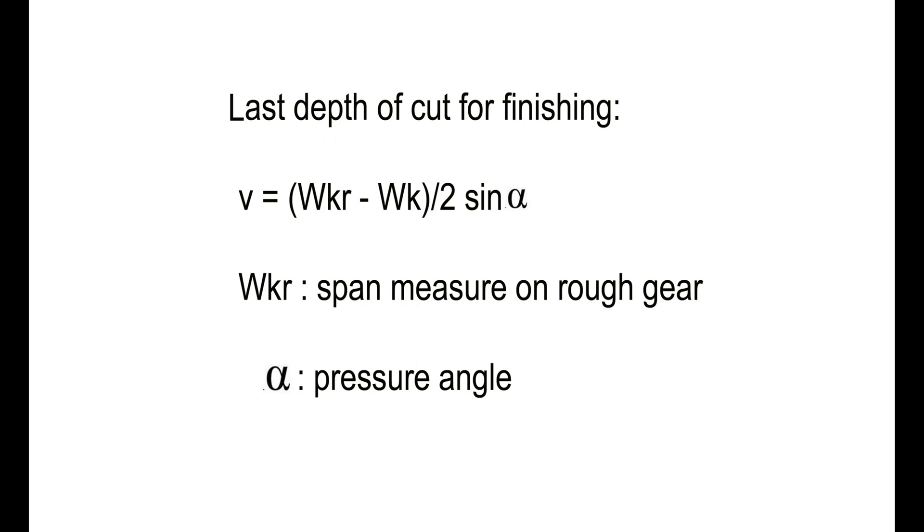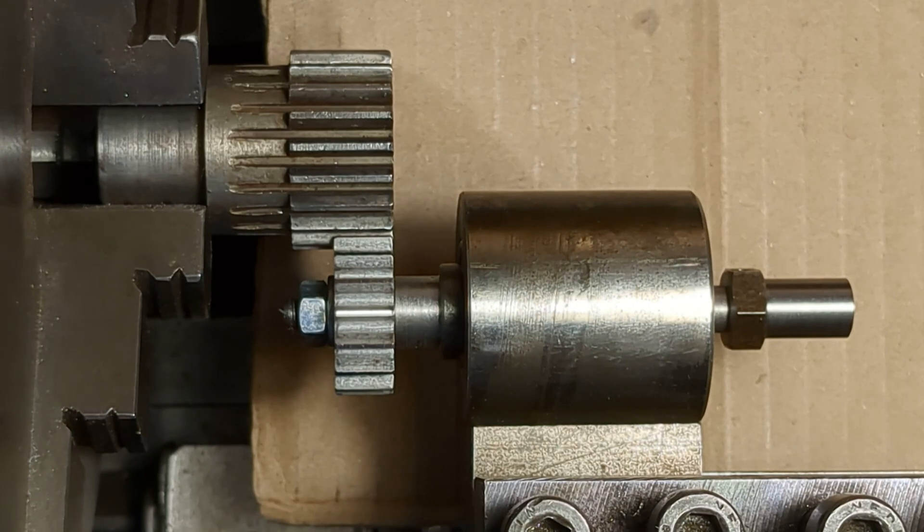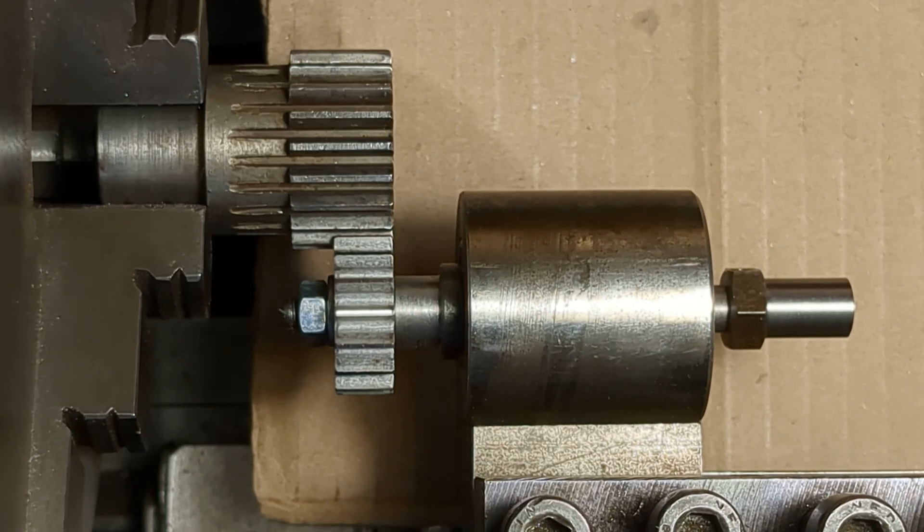Take the last span measure for a last control before taking out the finished pinion from the attachment. This pinion was then checked in a running test with a standard wheel for free and quiet run.